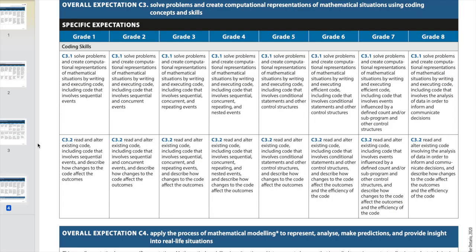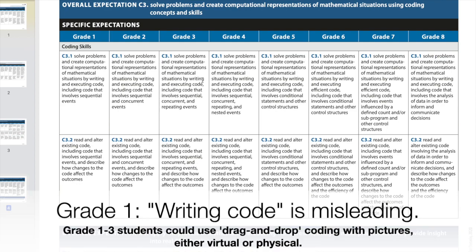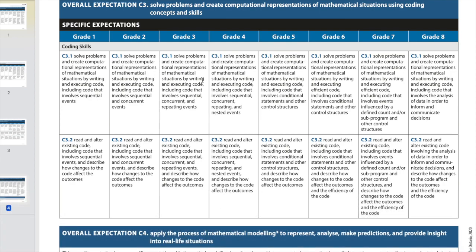We'll start with grade one and then move up to grade eight. The expectation reads: solve problems and create computational representations of mathematical situations by writing and executing code, including code that involves sequential events. The first issue is that at grade one, you're definitely not writing or executing code.